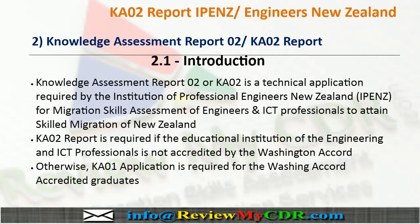Now comes the KA02 report. It is a technical application required by IPNS for Migration Skills Assessment of Engineers and ICT professionals to attain skilled migration to New Zealand. KA02 can also help you if your educational institution of the engineering and ICT professionals is not accredited by the Washington Accord.